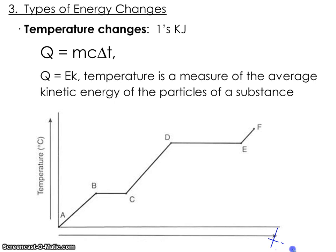Recalling from Science 10, you studied how to calculate heat, or Q, if there is a change in temperature. When you do the math, you're usually only considering values in the ones of kilojoules. The formula is Q = MCΔt, where M is mass, C is the specific heat capacity of the substance — the amount of energy required to change one gram by one degree Celsius — and ΔT is the difference from initial to final temperature. Q, which is energy, is related to the kinetic energy of the molecules; if they move faster, their temperature increases.